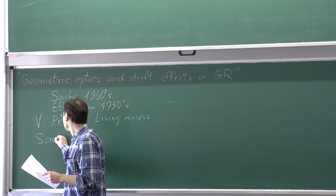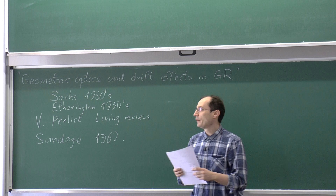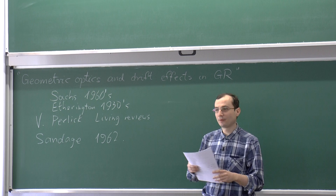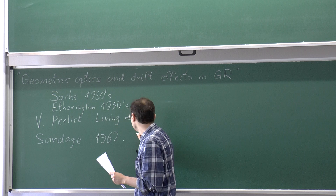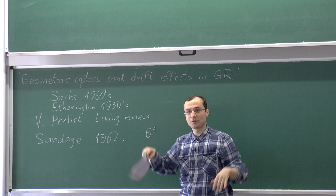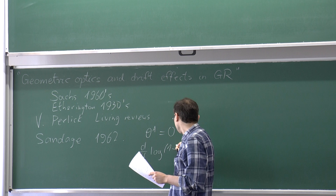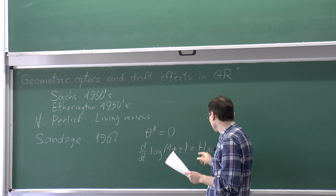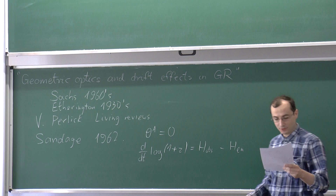The first paper about drift effects was written by Sandage in 1962. Sandage looked at the simplest homogeneous model of the universe — the Friedmann–Lemaître–Robertson–Walker model with completely uniform distribution of matter. He noted that as time passes, the positions of all distant sources which follow the cosmological flow are fixed on the sky, but the redshift does indeed change. It changes as the Hubble parameter at observation time minus the Hubble parameter at emission time, corrected by 1 over 1 plus z.